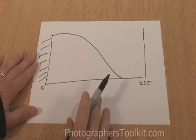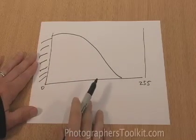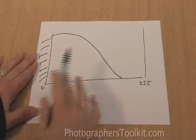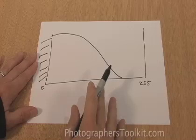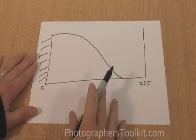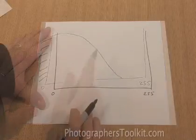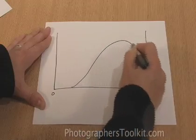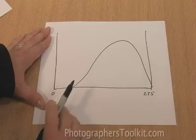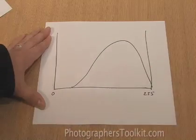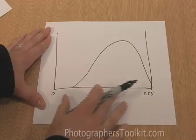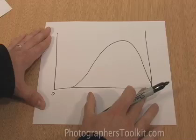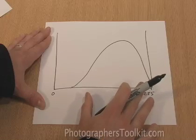A good way to think of this is that dealing with the histogram is like playing blackjack. In blackjack you don't want to go over 21 — you want to get as close to 21 as you can without going over. In the case of our histogram, we want to get as close as we can to the highlights without going over. The idea is to always expose to the right: put the histogram as far to the right as you can when capturing your image without going over.